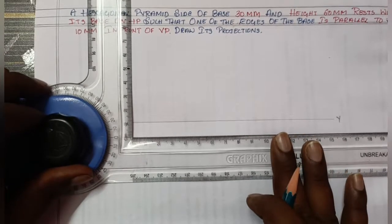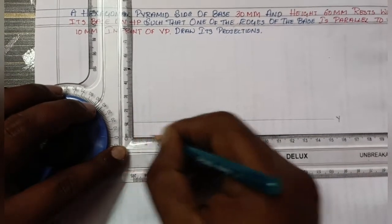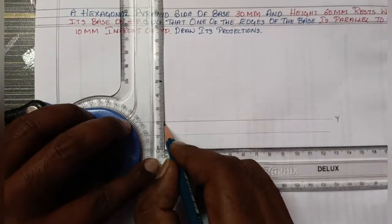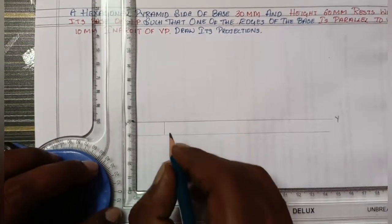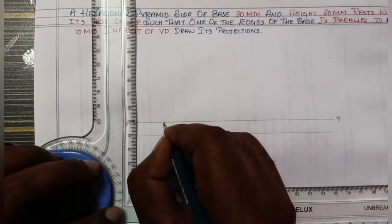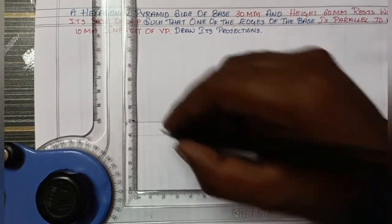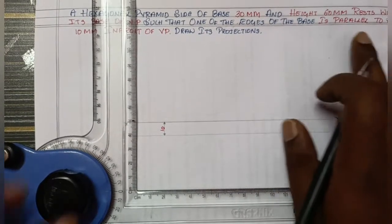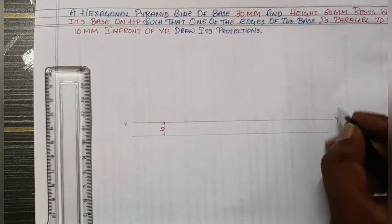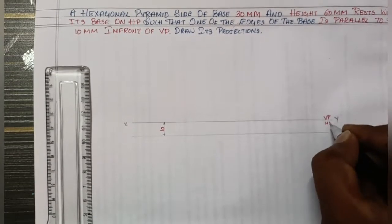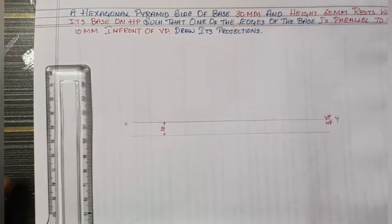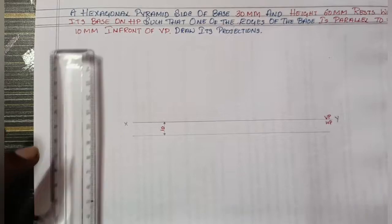In front of VP, 10 mm. From 1 to 10, we will draw the height of 10. So this height is 10. First we draw the XY line, and this is the HP. You can use a pencil to mark the side of the page.